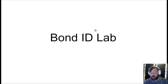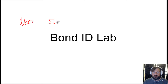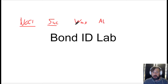The first thing we're going to do is I'm going to give you four different samples. These samples are going to be sodium chloride, sucrose, wax, and aluminum. Sodium chloride is going to be your ionic. Sucrose is going to be your polar covalent. Wax is going to be non-polar, and aluminum is going to be metallic.